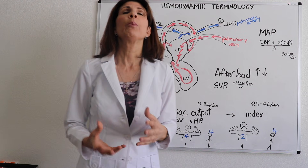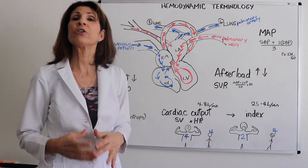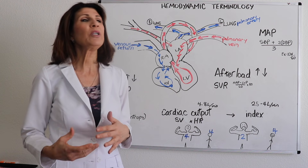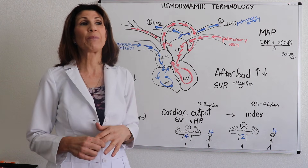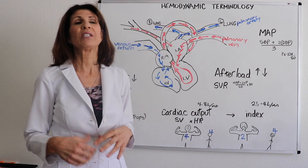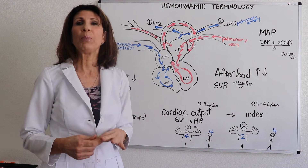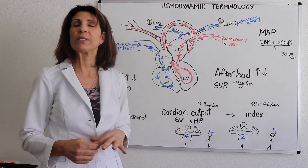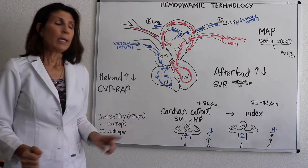We want patients to have a mean arterial pressure of at least 65 or greater. We use this for patients with circulatory compromise, those in shock, where we're struggling to maintain cardiac output and need to follow the MAP to ensure that their organs are getting perfused.